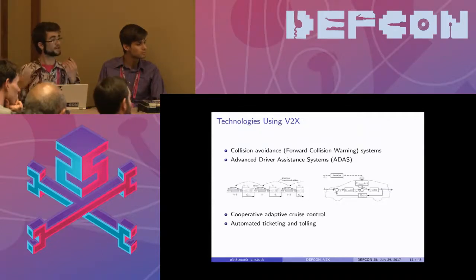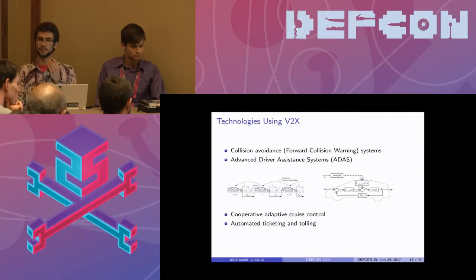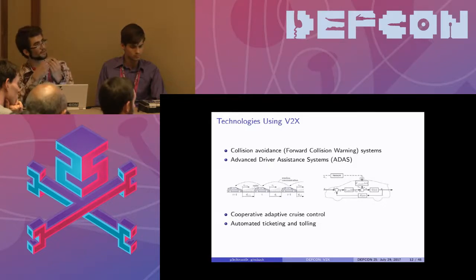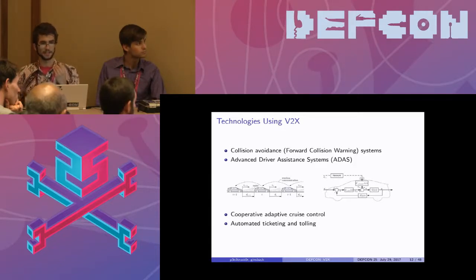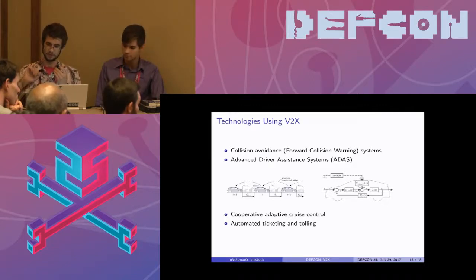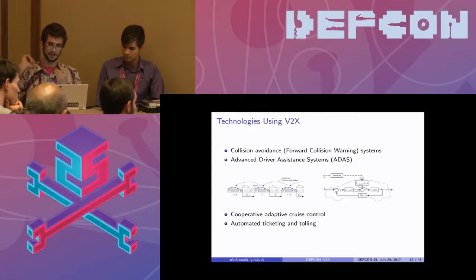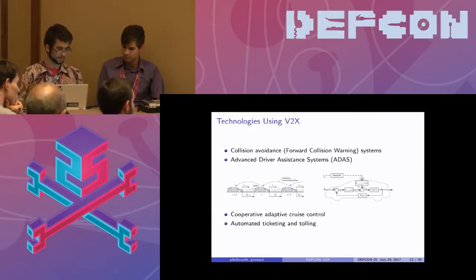There are already some deployed technologies using V2X rolling out in commercial automobiles over the last couple of years, like cooperative adaptive cruise control, where members of the network exchange state information and do some math in order to reduce the amount of stress and braking and to really smooth out the behavioral flow of these vehicles.